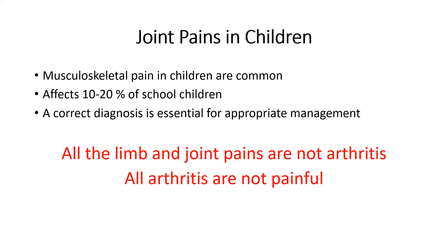Joint pains are common and affect up to 10 to 20 percent of school-aged children. However, the differential diagnosis is broad. Some underlying etiologies are not serious, whereas others can be life-threatening — such as septic arthritis — or can have a poorer prognosis, for example leukemia or systemic juvenile idiopathic arthritis presenting with joint pains.